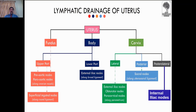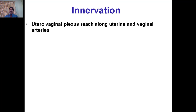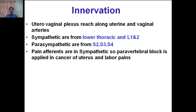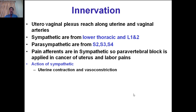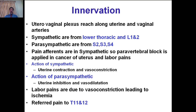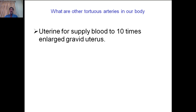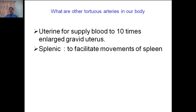The innervation of the uterus is via the uterovaginal plexus reaching along the uterine and vaginal arteries. Sympathetics are from the lower thoracic and L1–L2 segments of the spinal cord. Parasympathetics are from S2, S3, and S4 segments. Sympathetic fibers cause uterine contraction and vasoconstriction; parasympathetic nerves cause uterine inhibition and vasodilation. Labor pains are due to vasoconstriction leading to ischemia, and this pain is referred to T11 and T12 segments. The uterine artery is a tortuous artery because the size of the uterus increases 10 times during pregnancy — other examples of tortuous arteries are the splenic artery and the facial artery.